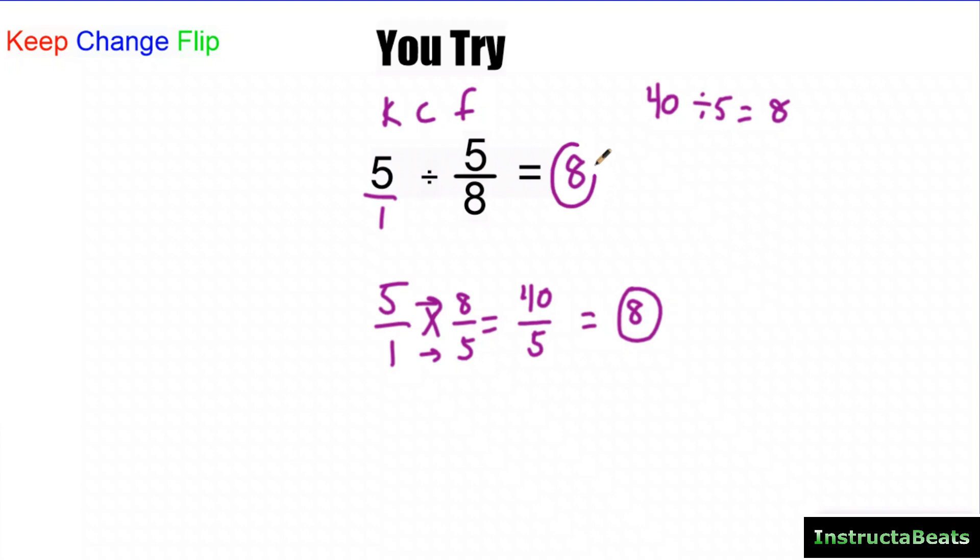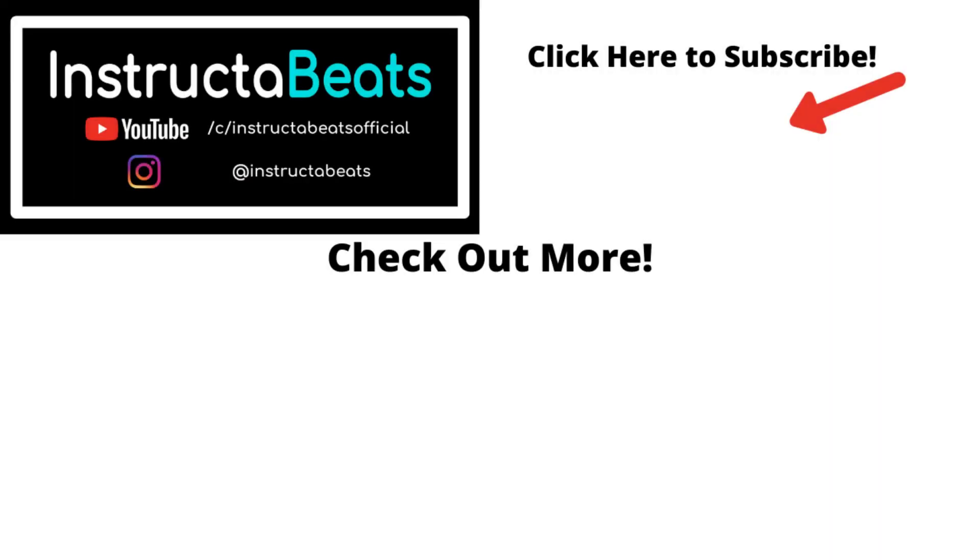All right. So here's a little shortcut. If you want to know another shortcut, check out our common denominators method. But really if you need to understand conceptually what's happening, check out our conceptual videos on how to do this with area models. Thank you so much for checking us out today. We hope you'll use this strategy. Check out our keep change flip song. It's one of my favorite songs. Not that I'm biased at all. We would love to have you join our InstructaBeats family by hitting that subscribe button. Like the video, let us know where you're watching from again. Thank you so much. InstructaBeats out.